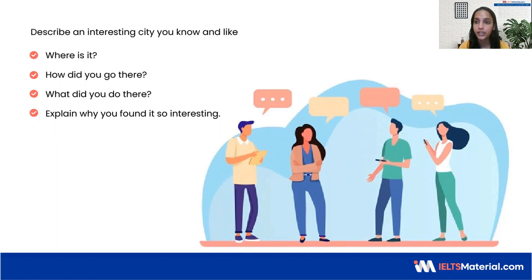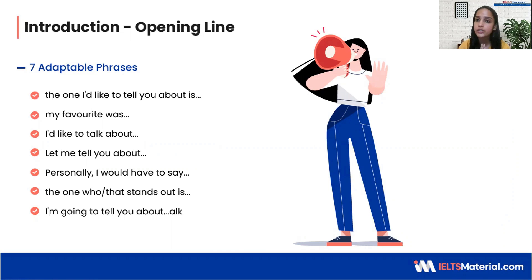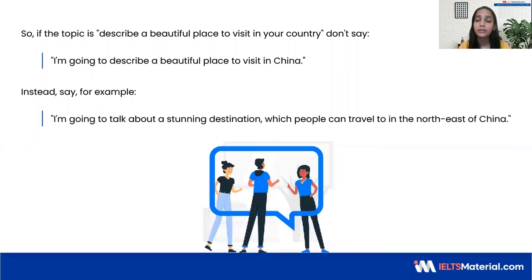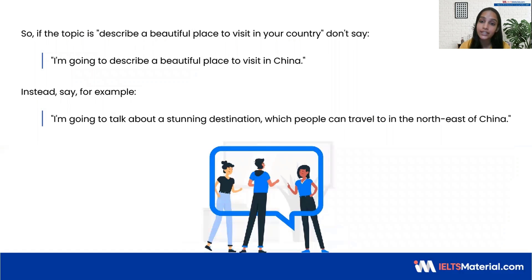First, let's understand the different strategies we have to keep in mind to deliver a good answer. Many students often wonder how to begin the speech. I have a very important technique for you to give an effective opening line. These are some adoptable phrases that you can ideally use for any cue card — you just need to reframe it as per the topic. To show your lexical resources range, you can always paraphrase the topic given in your question prompt instead of repeating the same words. For example, instead of saying 'I'm going to describe a beautiful place to visit in China,' you can say 'I'm going to talk about a stunning destination which people can travel to in the northeast of China.' This is more effective.